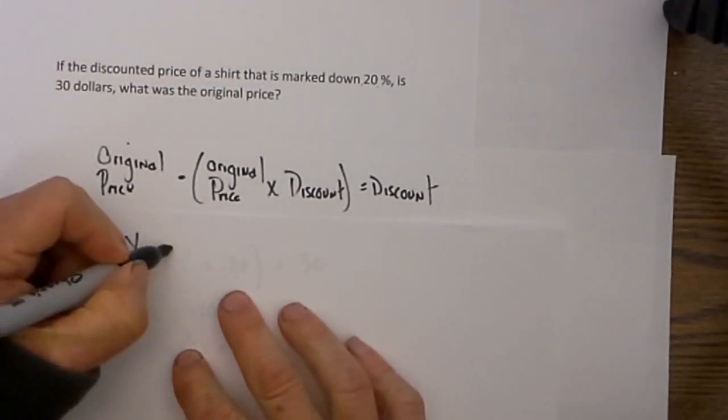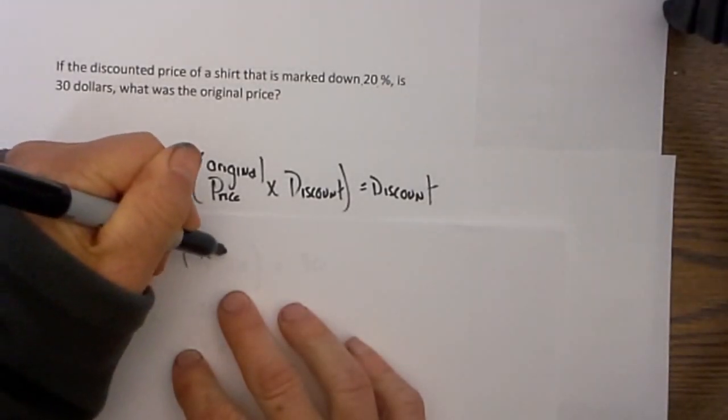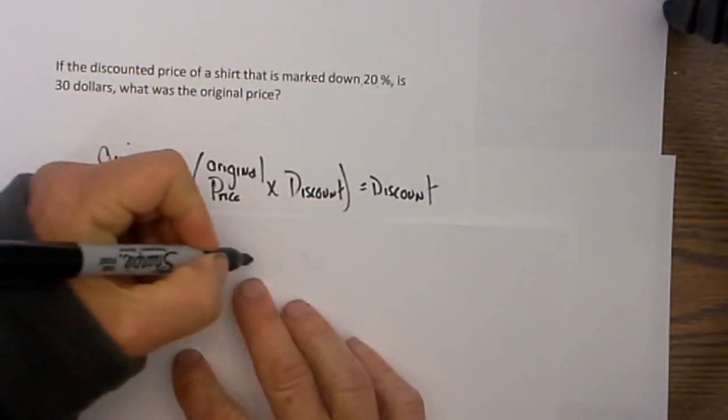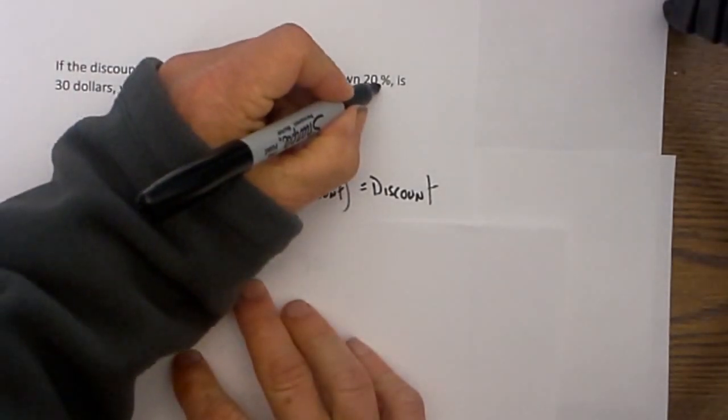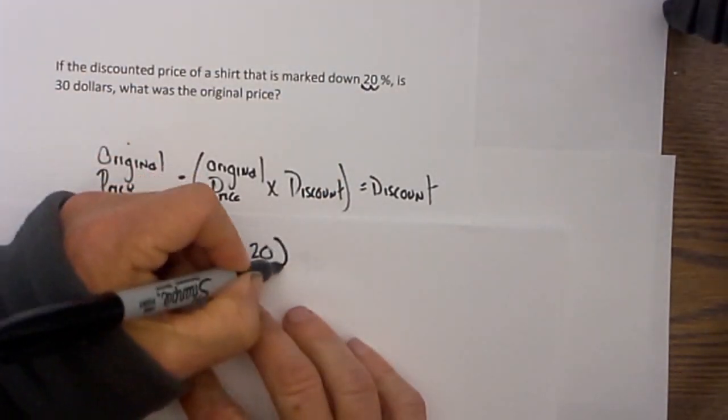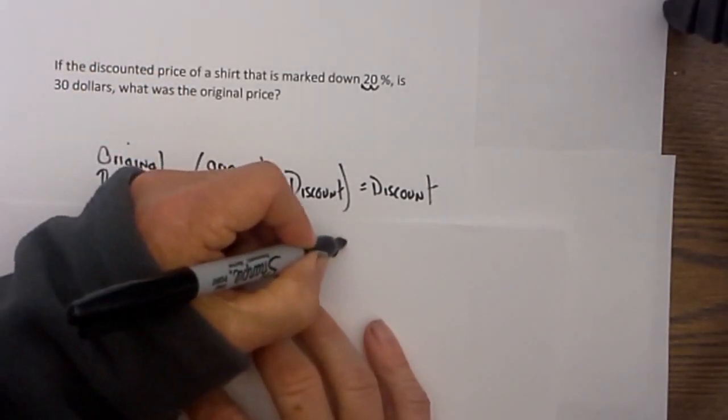Original price is what we are trying to figure out: x. The original price is x times the discount which is 20%, and I will write it as a decimal. Again, for the decimal, I just move two places to the left, and that is going to equal our discount price that we know, which is $30.